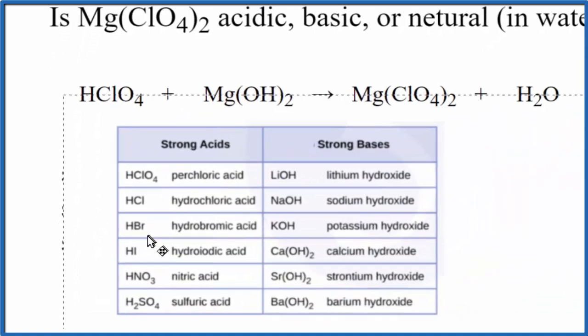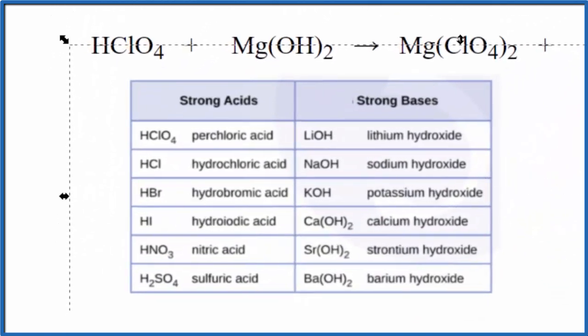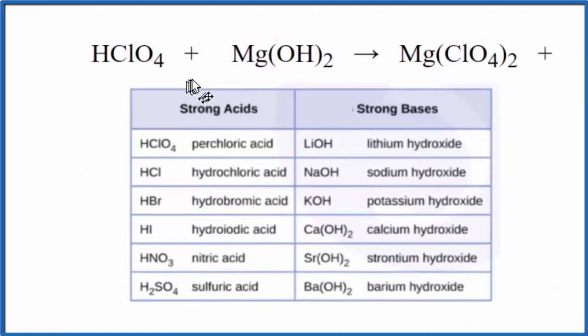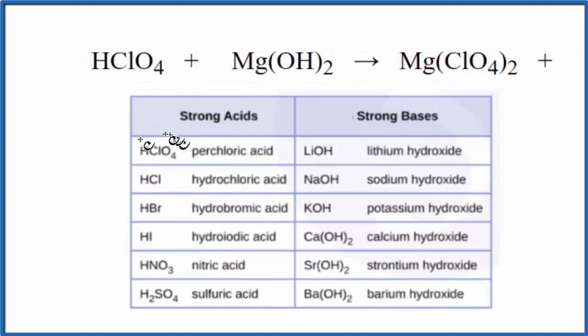So this table is a really good one to memorize. We're looking for HClO4, and here it is - HClO4, perchloric acid, is a strong acid.